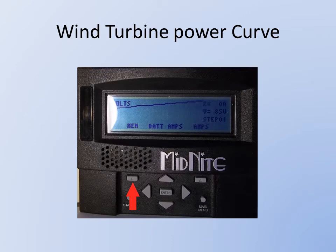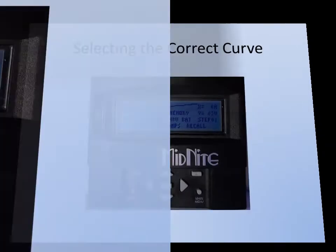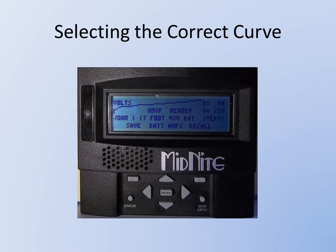Now we're in the graph section of the wind portion of the Classic's programming. Here we need to press the Memory button, as shown by the arrow. Now we need to use the up and down arrows to scroll through the presets and find the particular one that we're looking for. In this case, we were looking for the John 1 17-foot 48-volt battery.